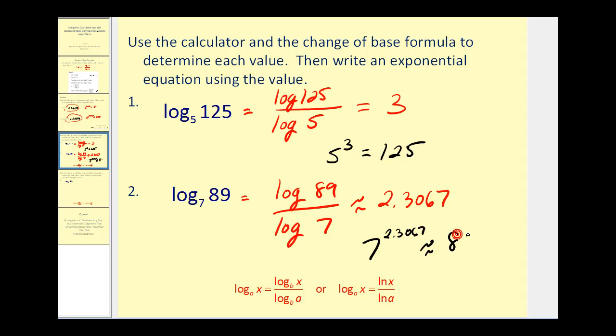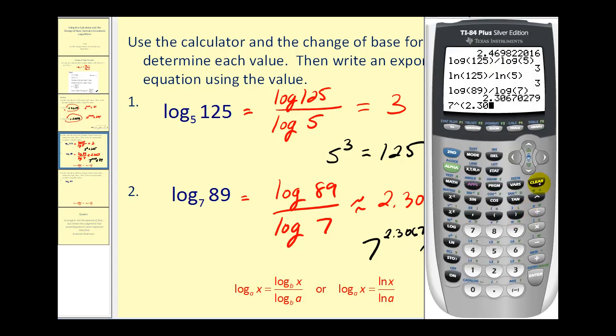And let's go ahead and just verify that. So if we take 7 and raise it to the power of 2.3067, we can see it's approximately 89. It's a little bit off because we did round to four decimal places.